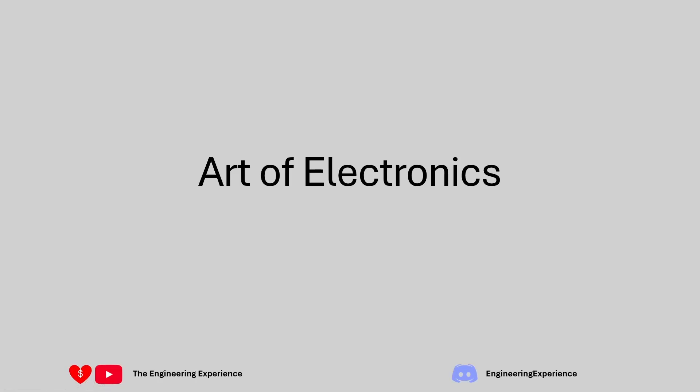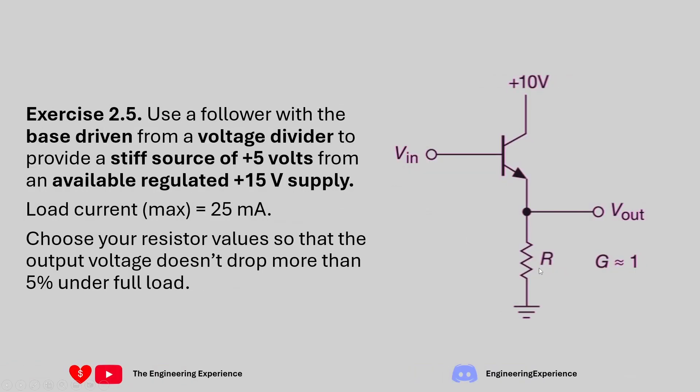Hello there. Today we're going through Art of Electronics exercise 2.5, which is on the emitter follower circuit. In this exercise we need to use the emitter follower circuit with a base driven from a voltage divider to provide a stiff source of 5 volts from an available regulated 15 volt power supply. The load current for the output has been given as 25 milliamps and we need to choose the resistor values so that the output voltage doesn't drop more than 5% under full load.